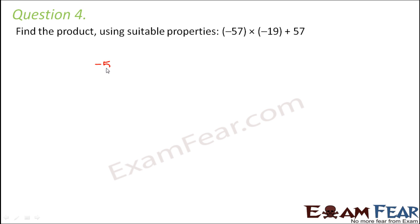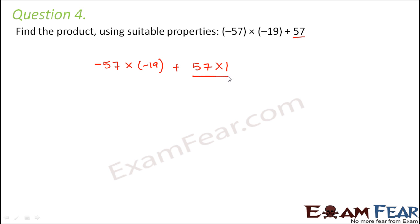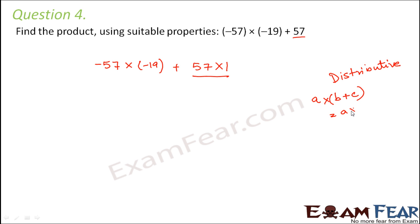This expression can be written as minus 57 into minus 19, plus 57 into 1. You can write it this way because 57 into 1 is 57. By looking at this, do you remember any property? Yes, it reminds us of the distributive property. As per the distributive property, a into b plus c is equal to a into b plus a into c.